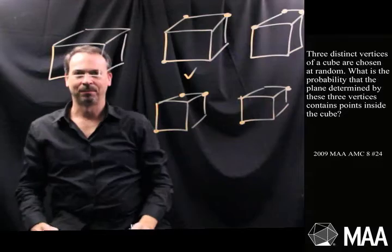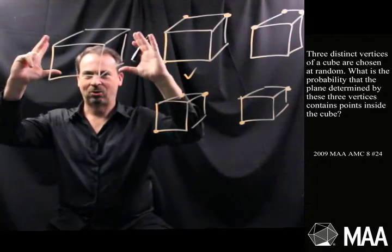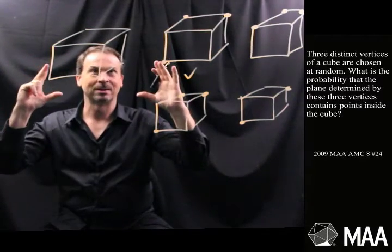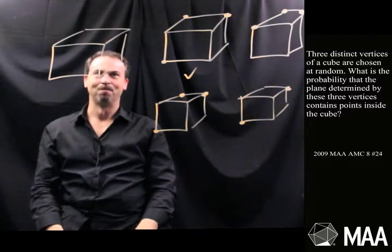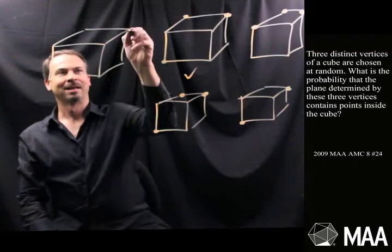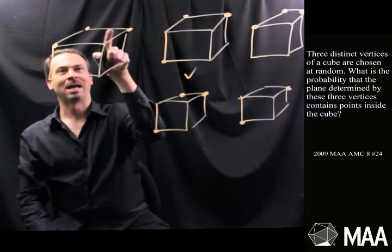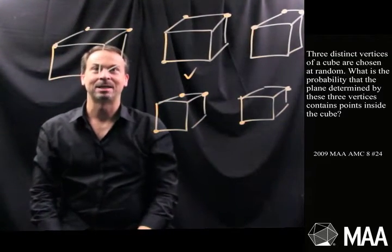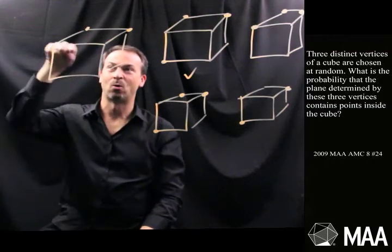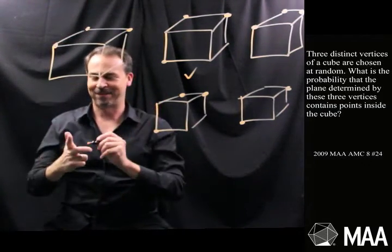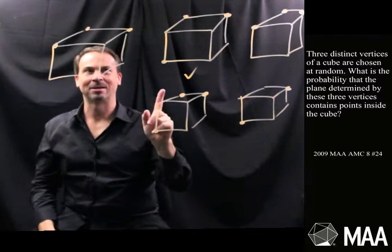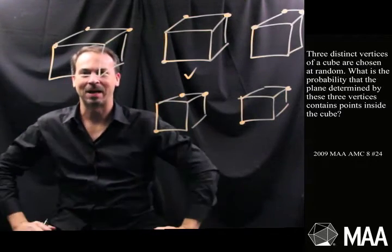Maybe the question is, out of all the ways I could choose three vertices, how many of those have all three vertices in the same face? Beautiful. There are six faces. And how many ways could I choose three vertices in one face? I guess there's four ways, whichever blob I'm not choosing. I feel like I can now count how many ways to choose three vertices in the same face.